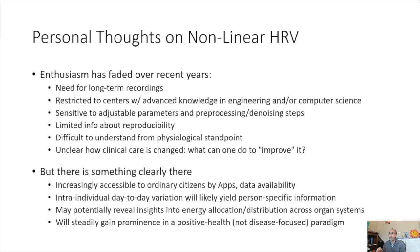From my opinion, there's clearly something there. Nonlinear heart rate variability measures have often outperformed traditional heart rate variability measures with regard to mortality in a number of situations and conditions. Nonlinear measures are increasingly available and accessible to ordinary citizens through apps and data availability. I think intra-individual day-to-day variations will likely use personal specific information, and this is an area that has been understudied — the dynamic changes in heart rate variability, including fractal-related measures, have not really been evaluated in great detail.